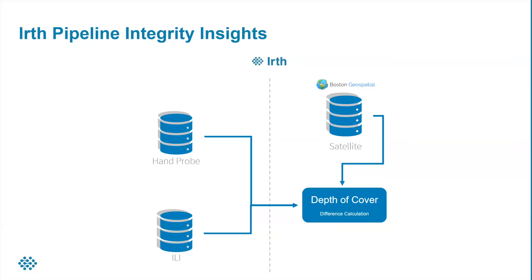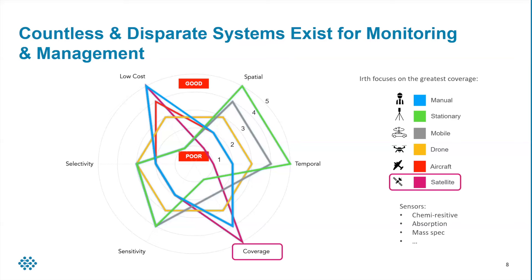Now that we have the lat-longs, our satellite provider can point the satellite imagery directly at those locations and pass back the data, allowing us to determine the difference calculations — the depth changes at each lat-long. The process is very simplistic; not too complicated at all.